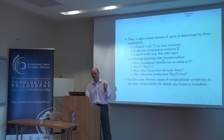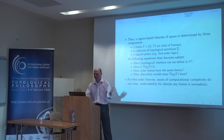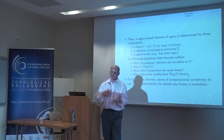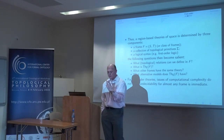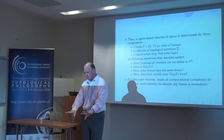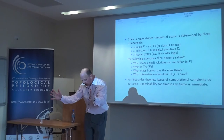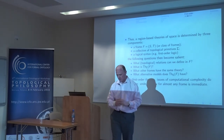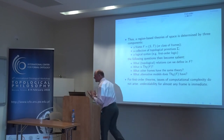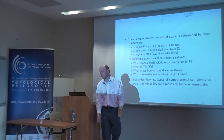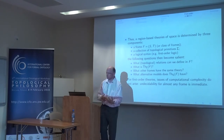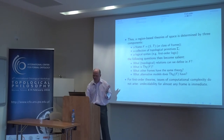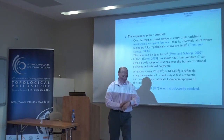The following questions then become salient: what relations can we define? What's the theory — what statements are true? What other frames have the same theory? What alternative models does this theory have? If you're interested from a philosophical point of view in theories of space, you can take some standard model of space, take a language with your geometrical primitives and logical syntax, there will be a theory — a set of sentences which are true — and you can ask lots of technical questions like what can you define, what computational properties does the theory have, what alternative models does it have.